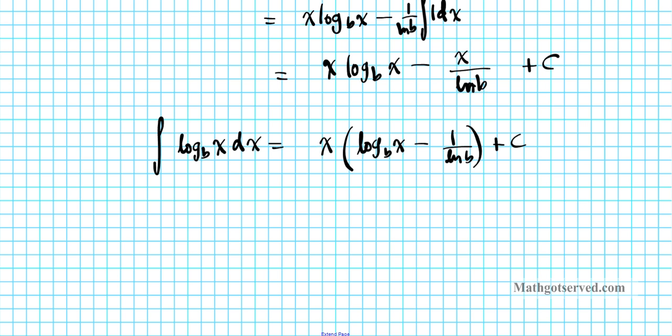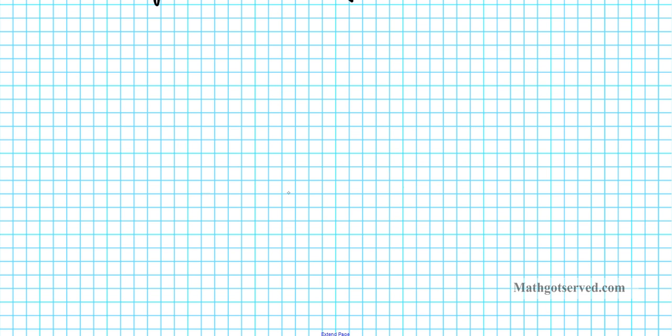Now let's take a look at another example — a pretty unique problem. This problem requires the use of integration by parts twice, and also the use of u-substitution. We're going to use two techniques, with one being used twice. The problem is: evaluate the integral of x cubed cosine(x squared) dx.